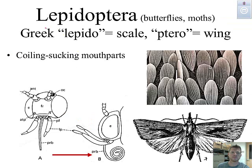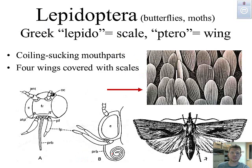Lepidoptera means scale wings. If you've ever touched a moth or a butterfly, you know that you get a little bit of dust on your fingers — and microscopically we can see that they are little scales. We can also look for the proboscis, which they use to feed on nectar. Moths and butterflies are great pollinators and play a very important ecological role.